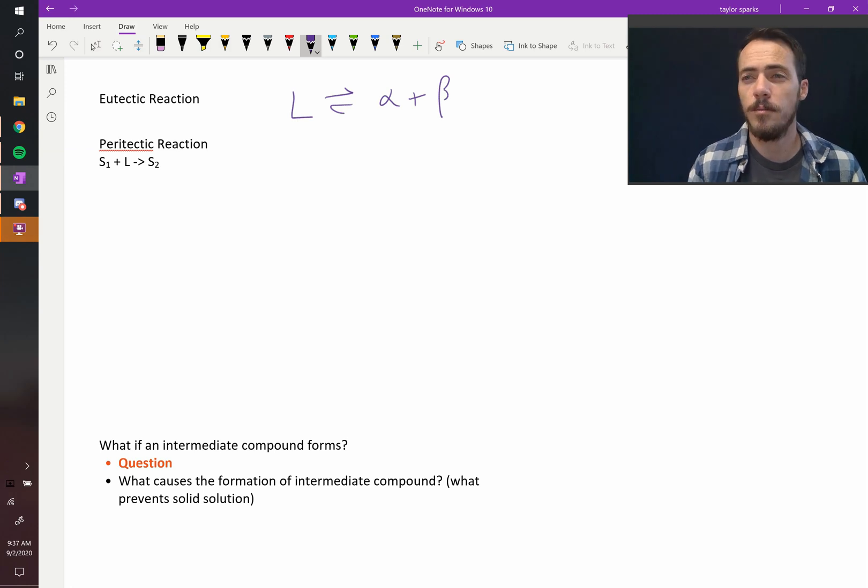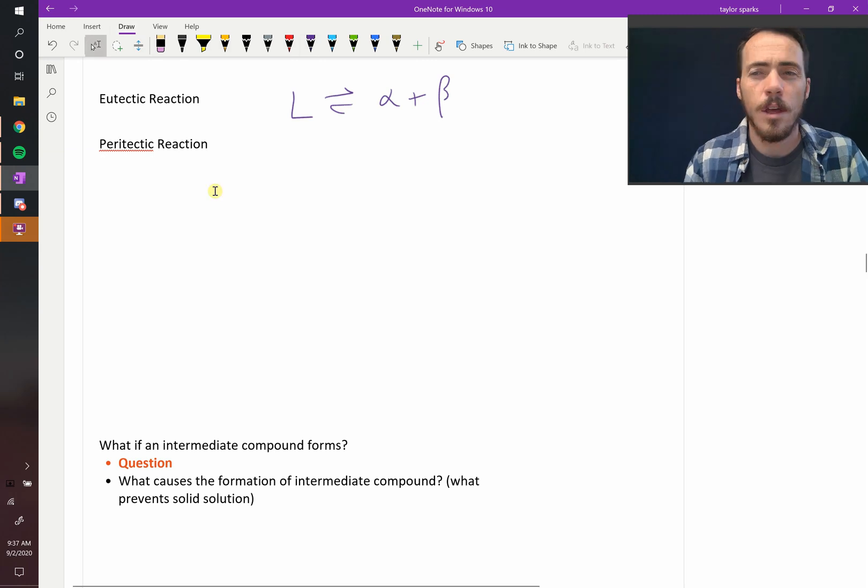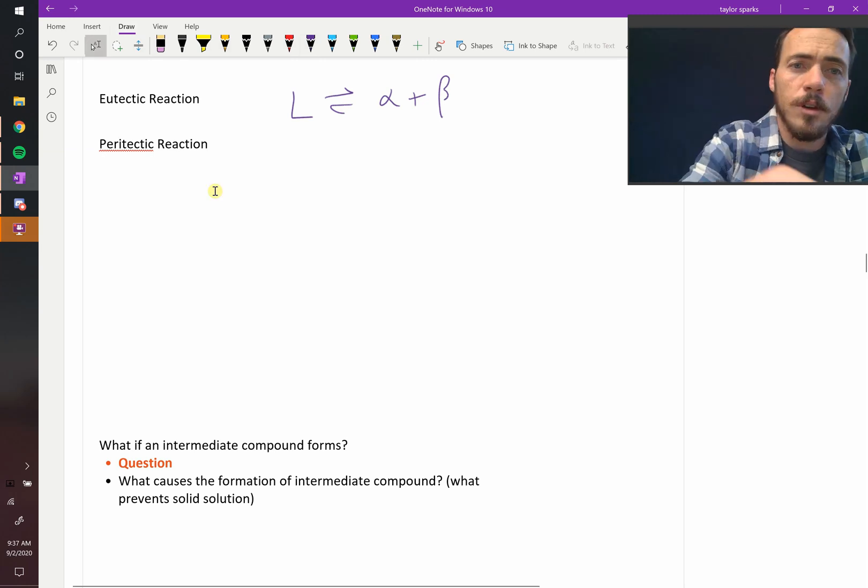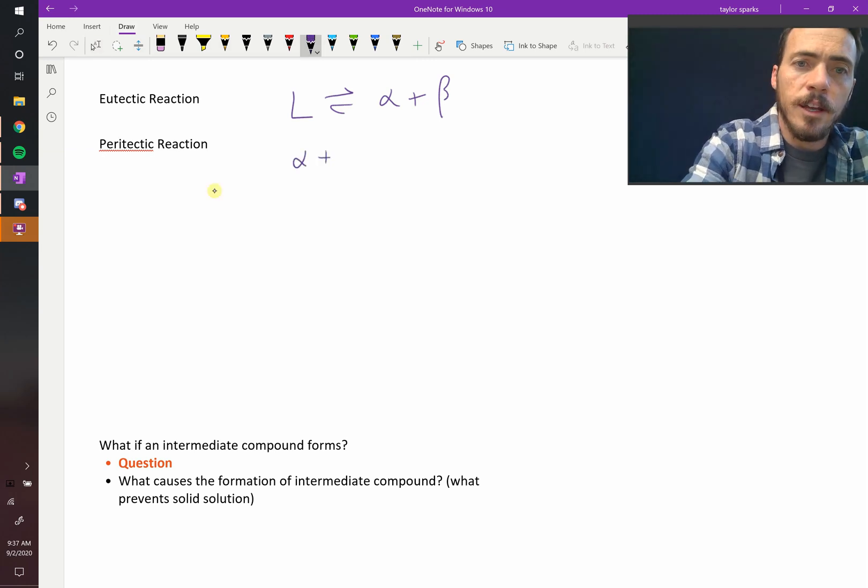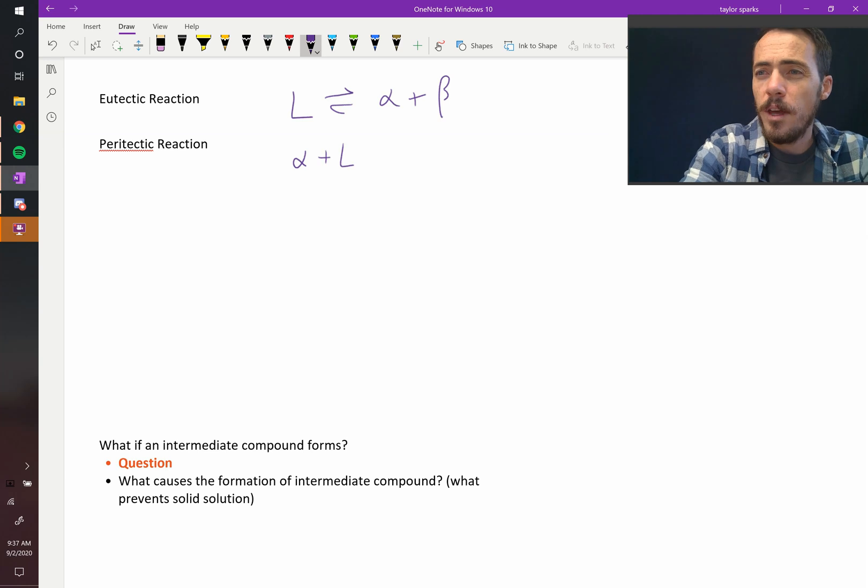We will talk about the actual crystal structures in a later chapter. Another type of reaction is possible, where you start out with a solid and a liquid, and they form a new solid.